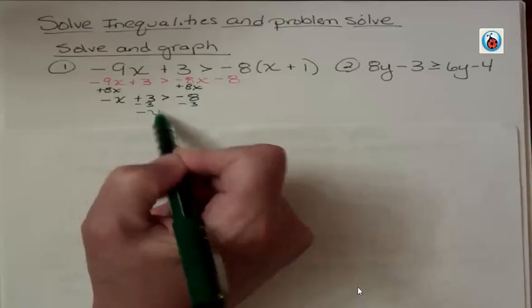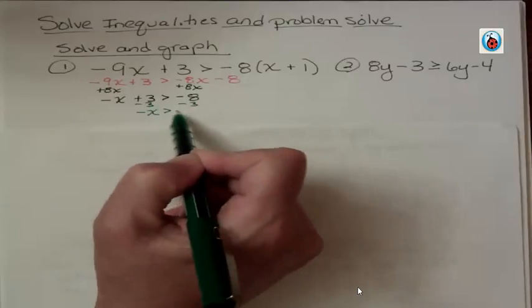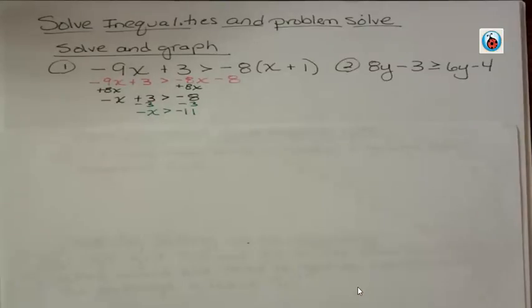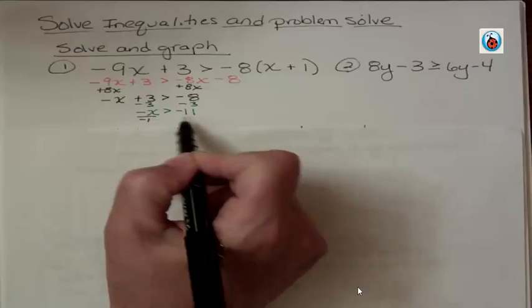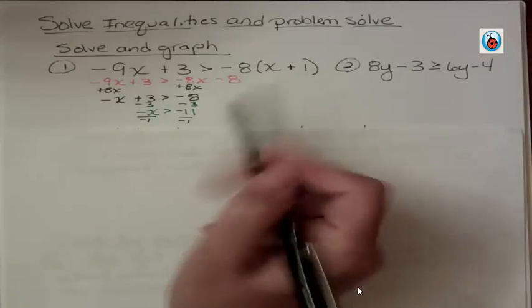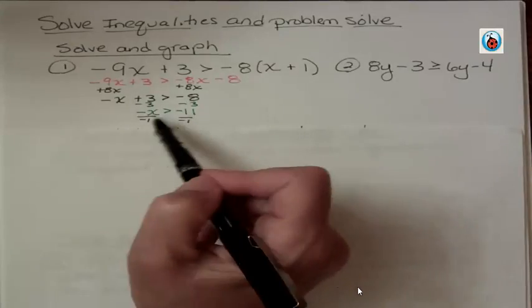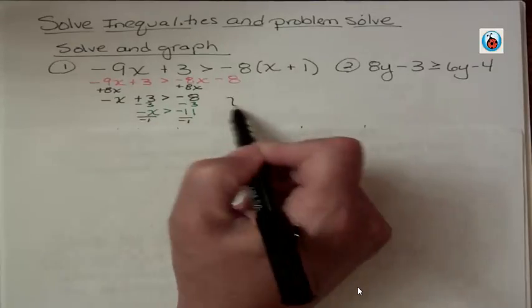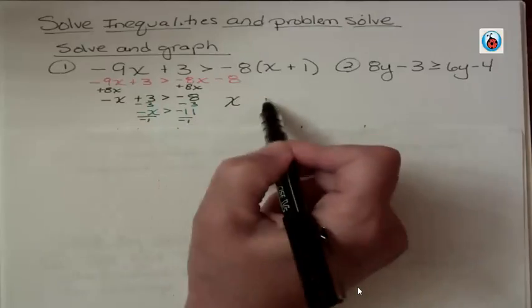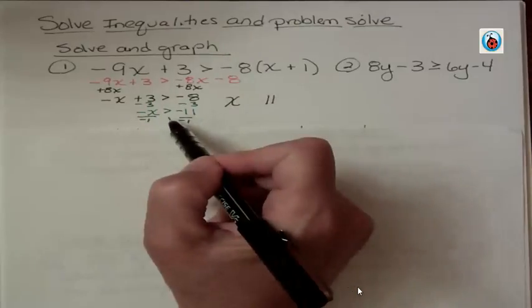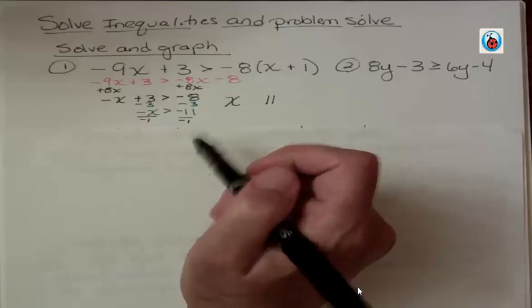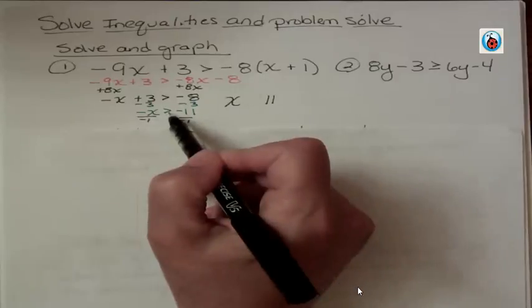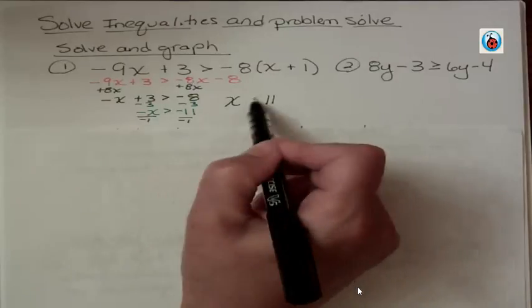I get negative x is greater than negative 11. And now I can't leave this alone because I have to get rid of that negative in front of the x. So if I divide both sides by negative 1, what happens when I divide by a negative? Two negatives make it x, and over here two negatives make that 11. But remember when you multiply or divide by a negative you've got to reverse the direction, so that greater than becomes less than.